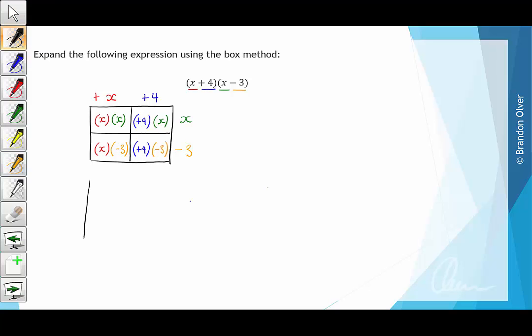So next we just redraw the boxes and we clean up each of the multiplications. So the first one is just x times x which gives x squared. And then going across the row we have 4 times x which gives positive 4x. Then going down we get negative 3x and lastly we get positive 4 times negative 3 which will give negative 12.